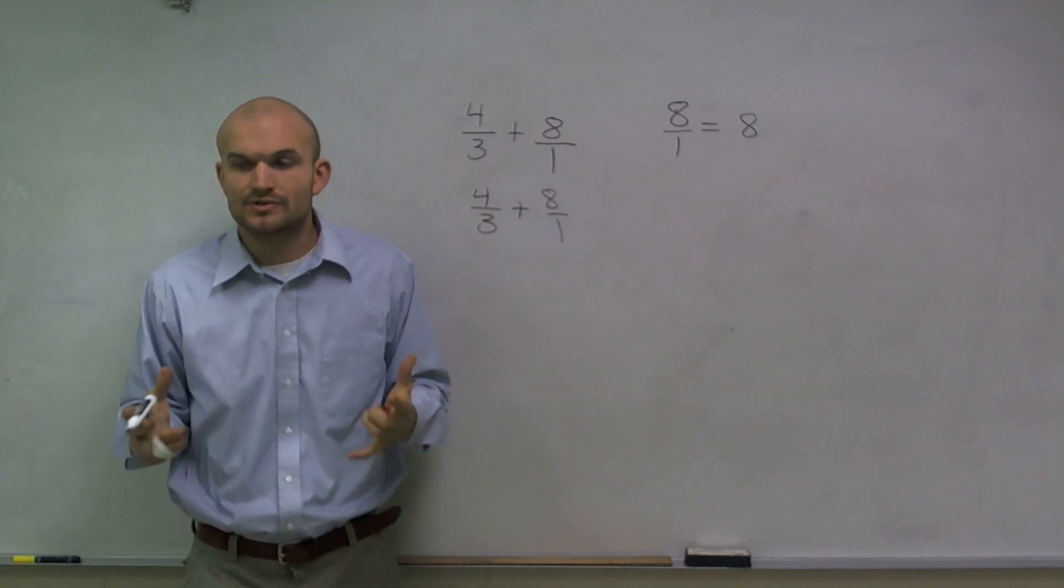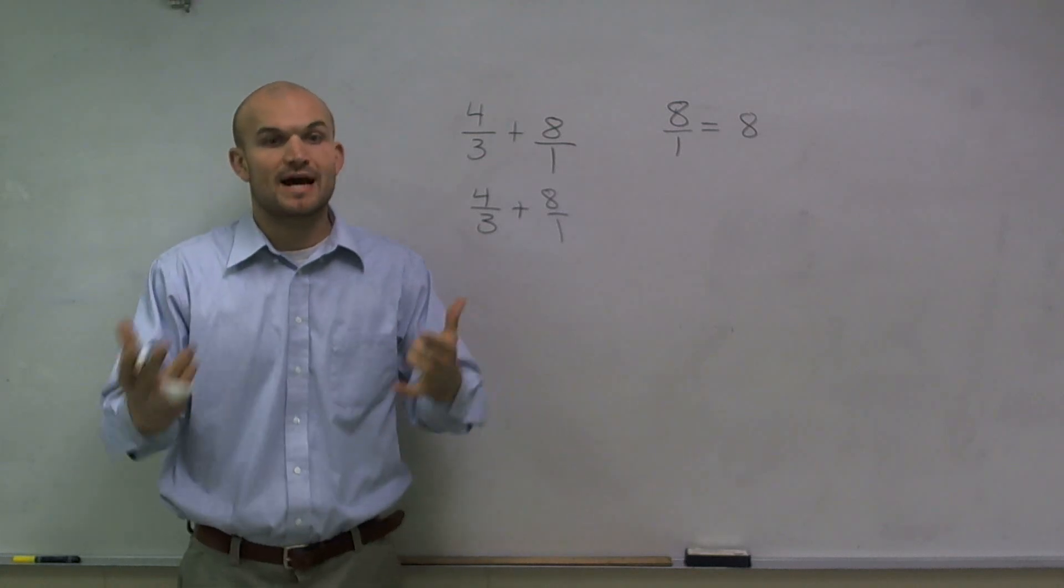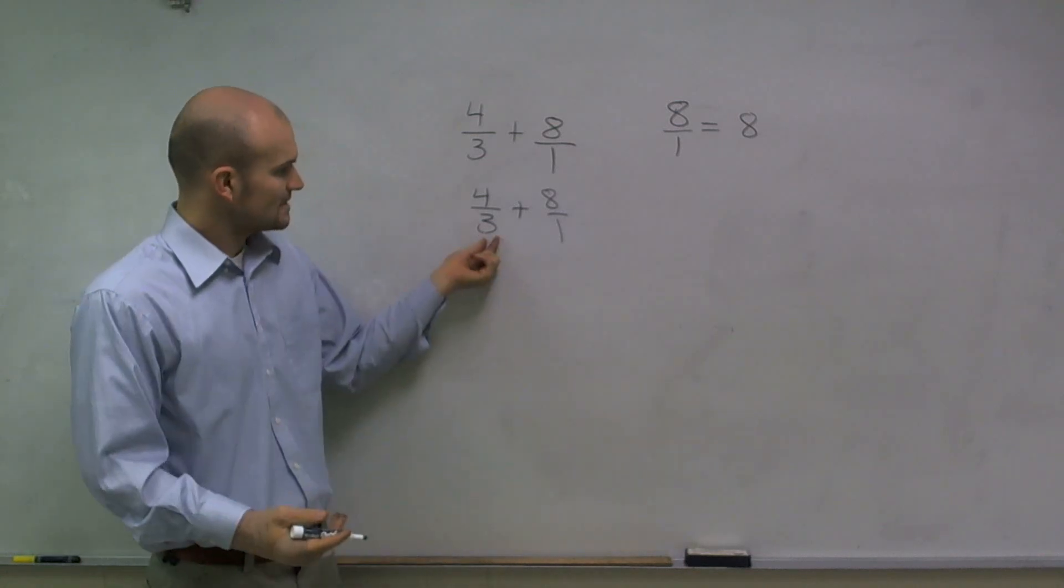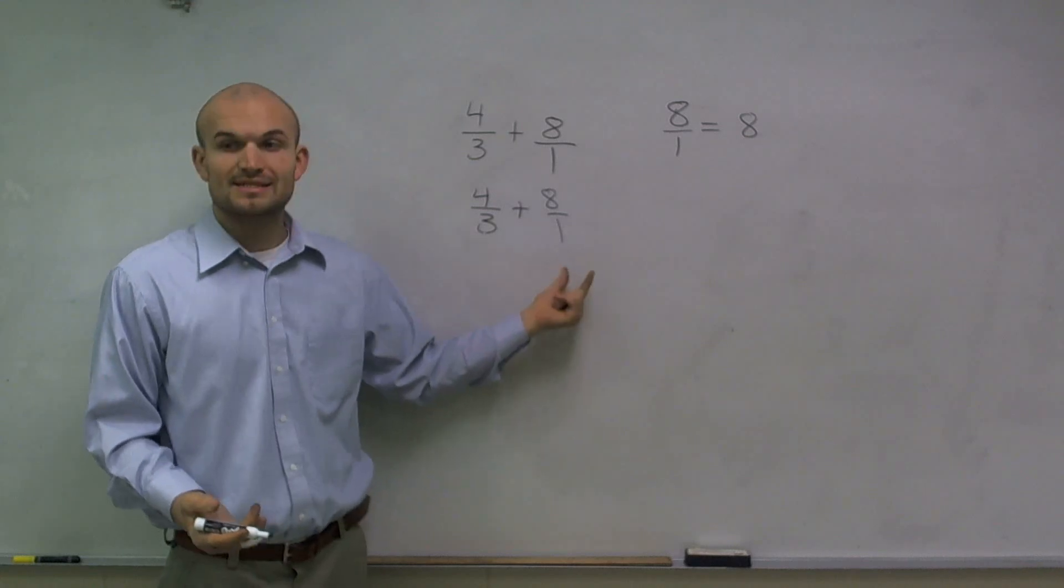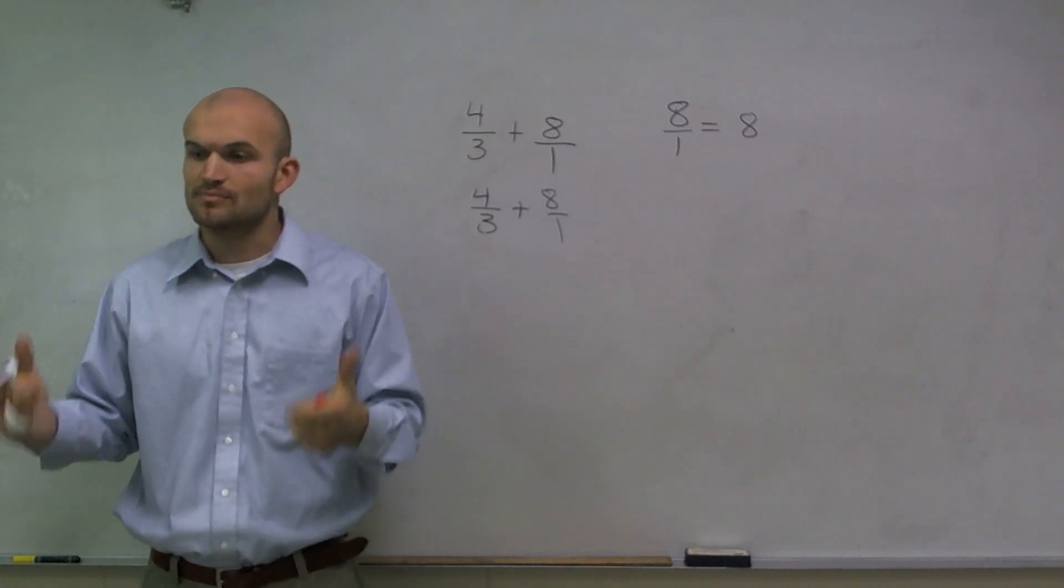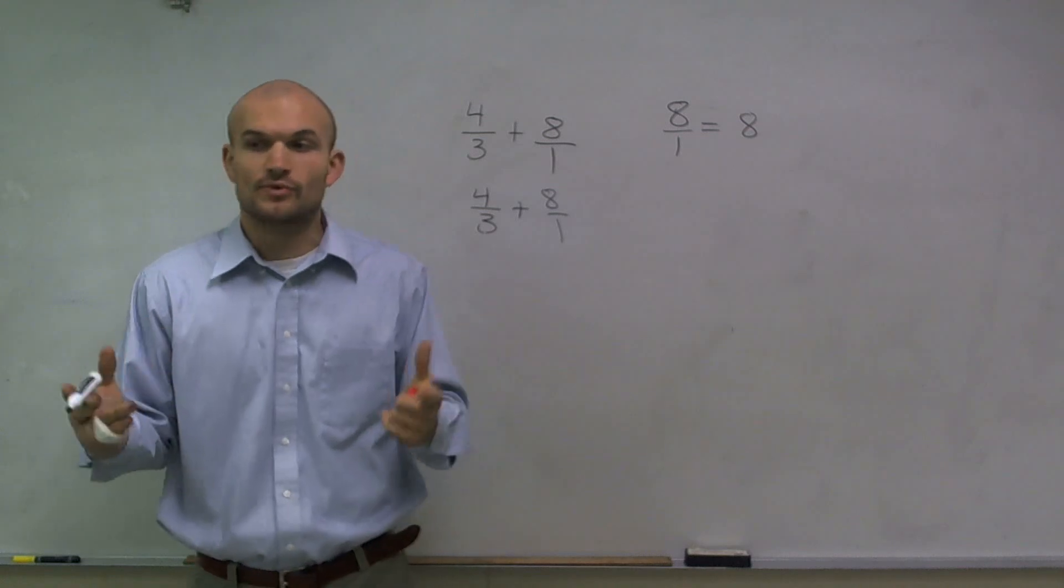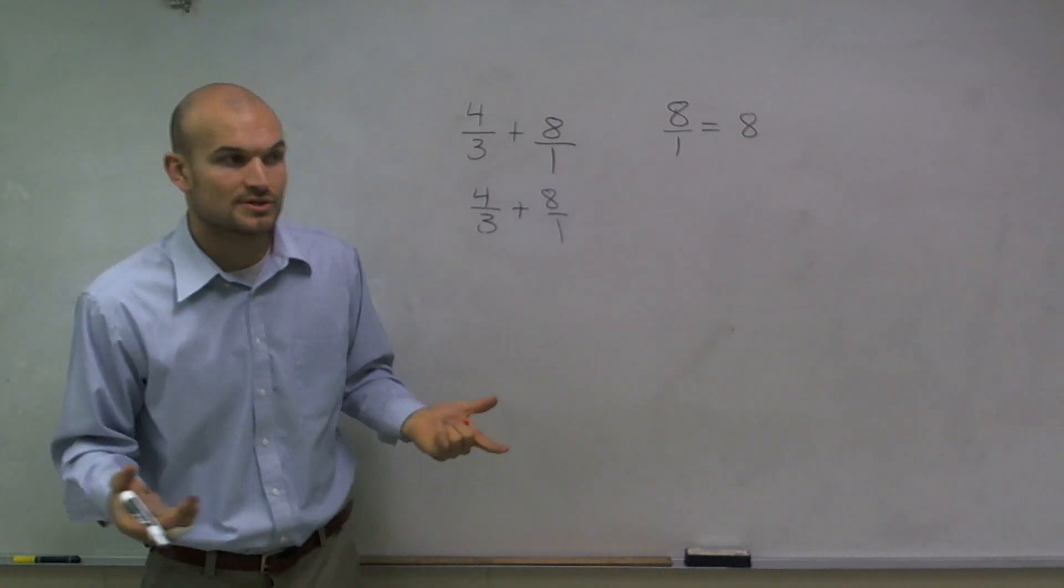And then, now I can use, oh, I remember. Now, with fractions, you have to have the same denominator. This has a denominator of 3. This has a denominator of 1. So to get them to be the same denominator, I need to find what is the smallest number that both 1 and 3 go into. And the smallest number is 3.